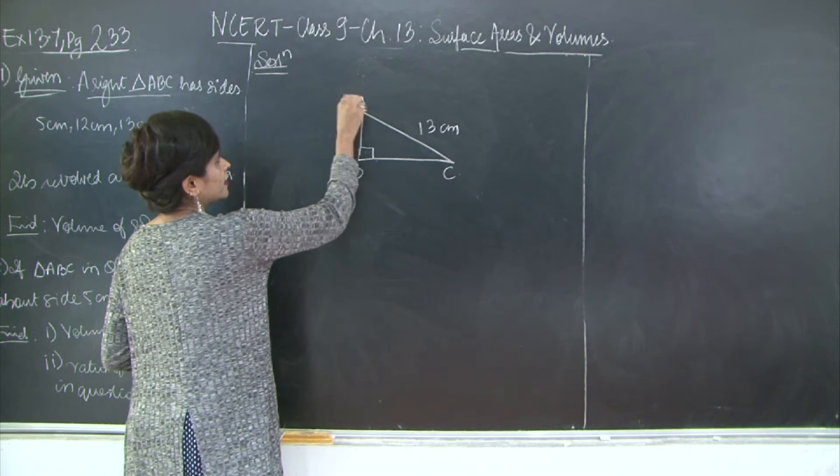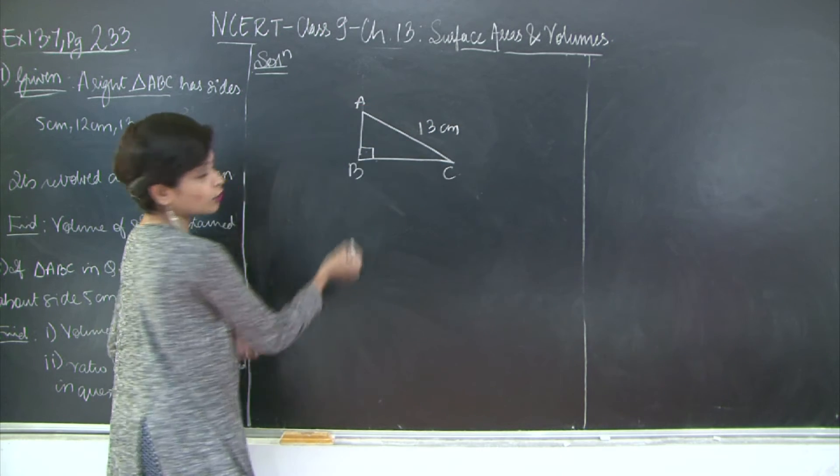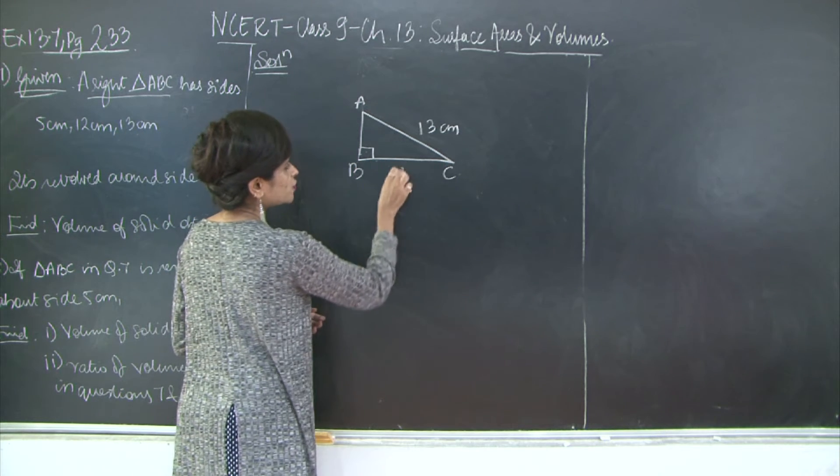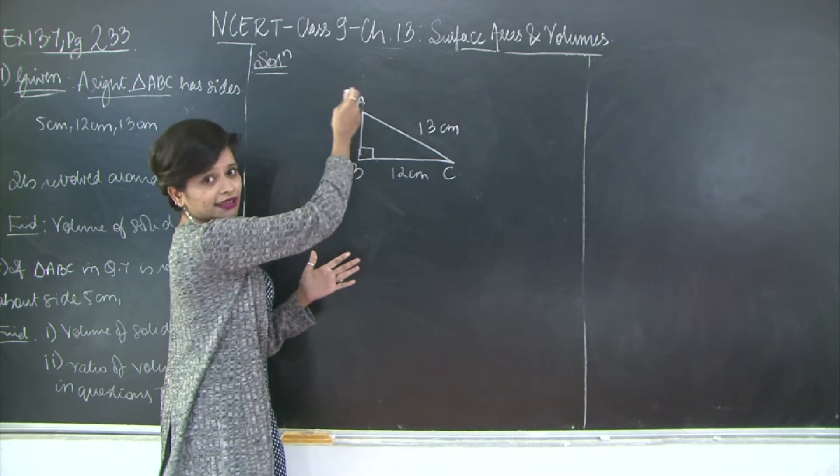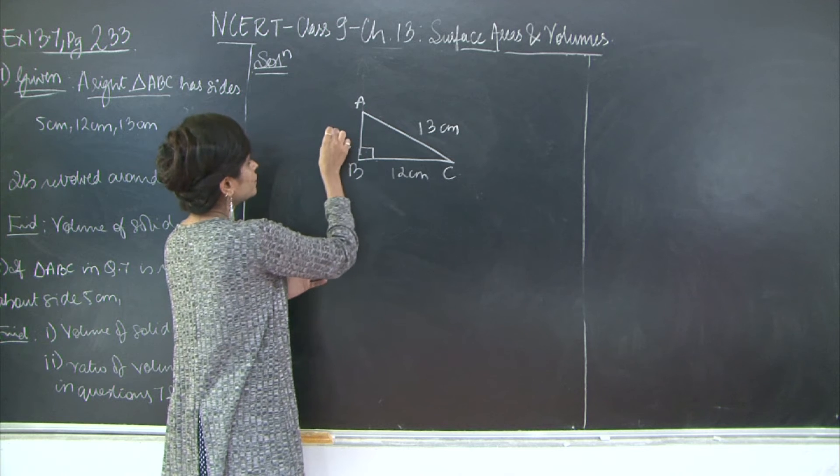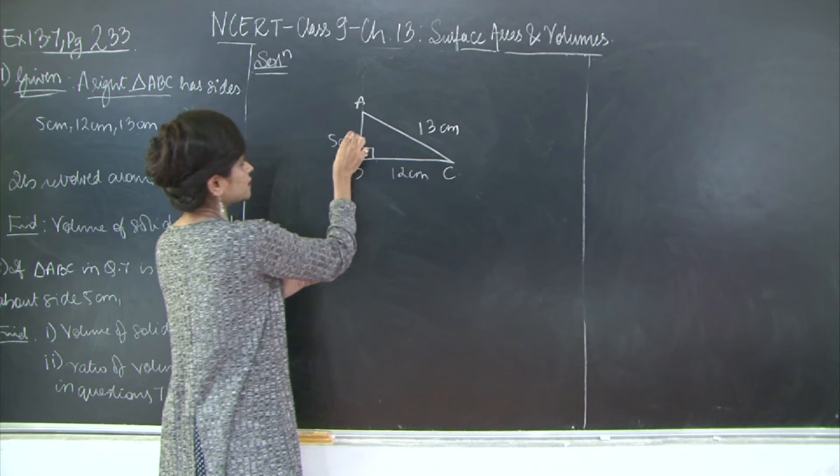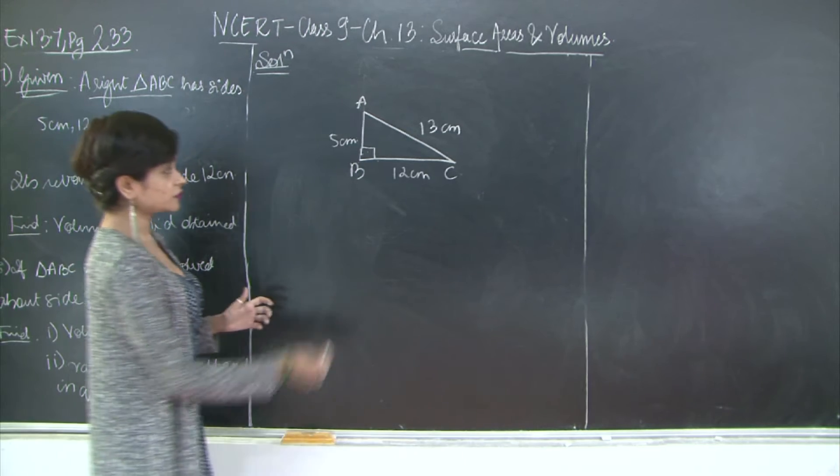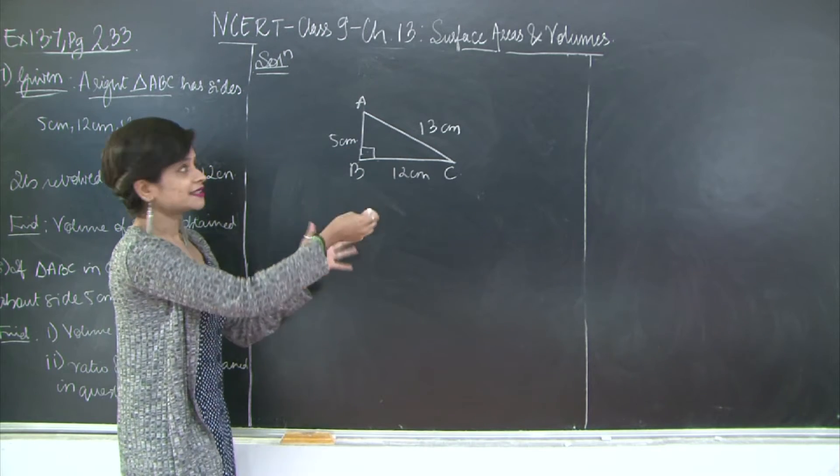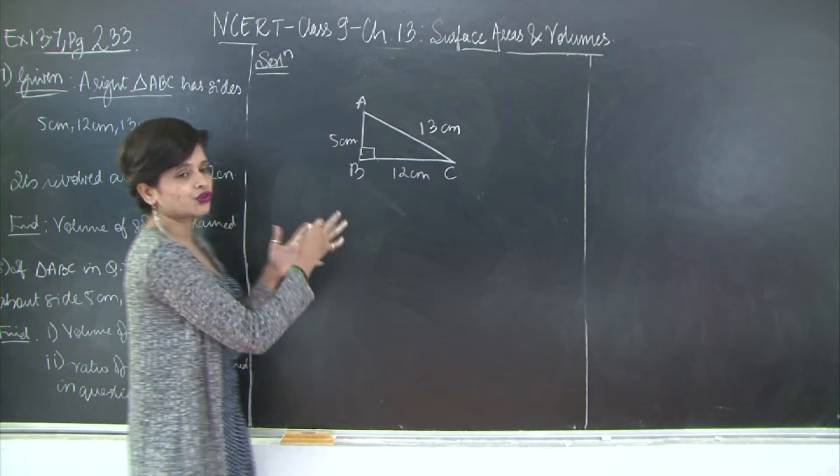Now if you compare these two lengths, this length and this length, obviously this one looks greater. So this will be 12cm. You can even shorten this length out here and increase the length out here. So this becomes 5cm. Clear? So this is your right angled triangle ABC with the different sides mentioned. As mentioned, we have just drawn a diagram.